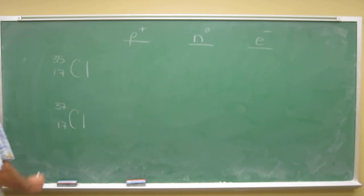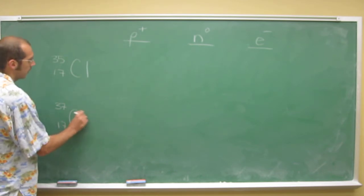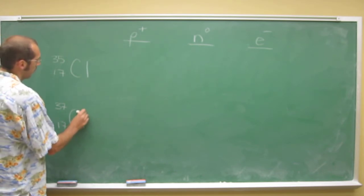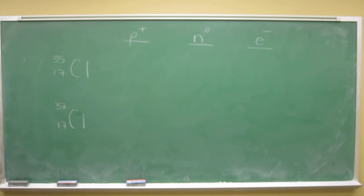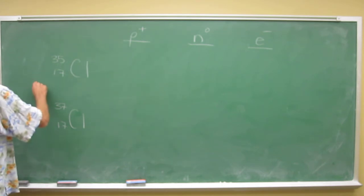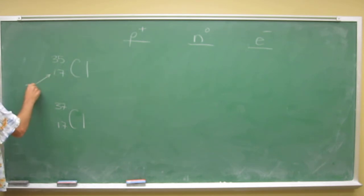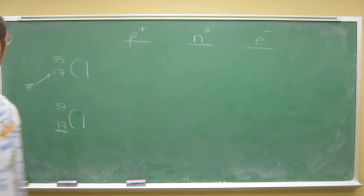They're atoms, not ions, so you know that the number of protons and electrons are the same. That's going to be the same as the atomic number right there. Remember, the atomic number is written as the subscript to the left of the atomic symbol. That shows the number of protons.